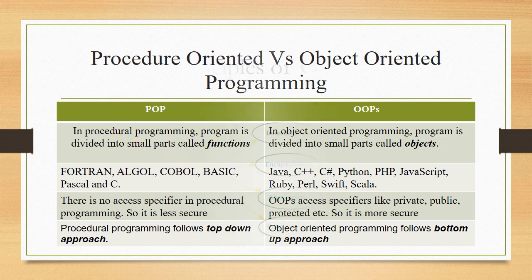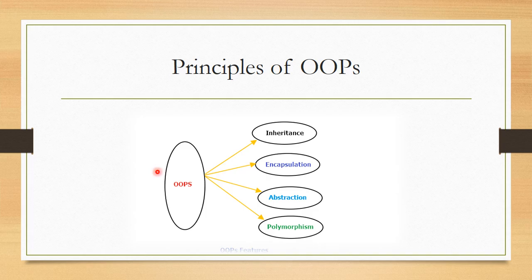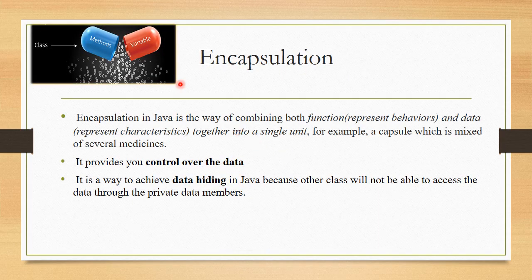Moving to the next slide — the Principles of OOPs. OOPs has four main pillars, also called the main principles or features of OOPs. These four pillars are: Inheritance, Encapsulation, Abstraction, and Polymorphism. We will discuss each of these more thoroughly.